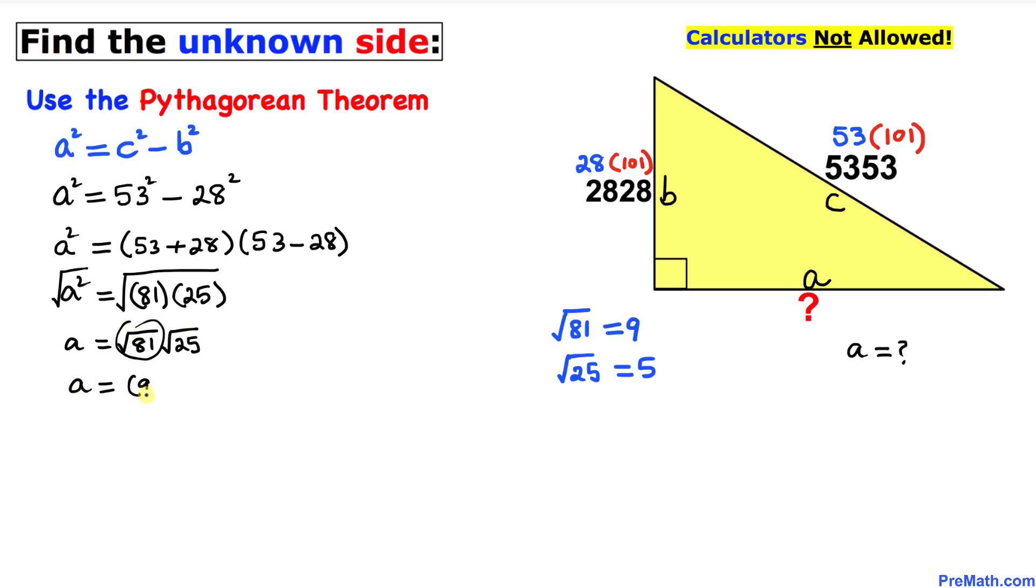Therefore, our a value turns out to be, the square root of 81 is 9 and the square root of 25 is 5, so a turns out to be 45.